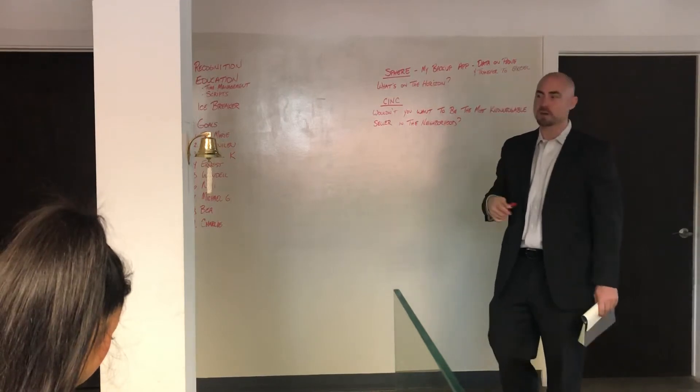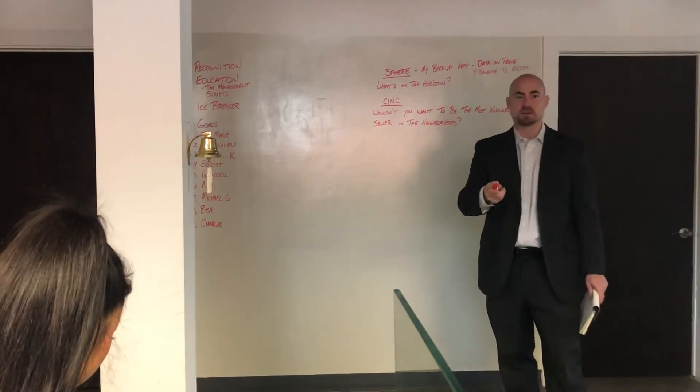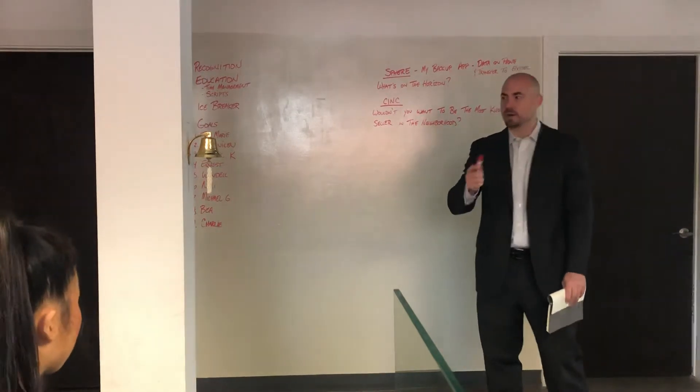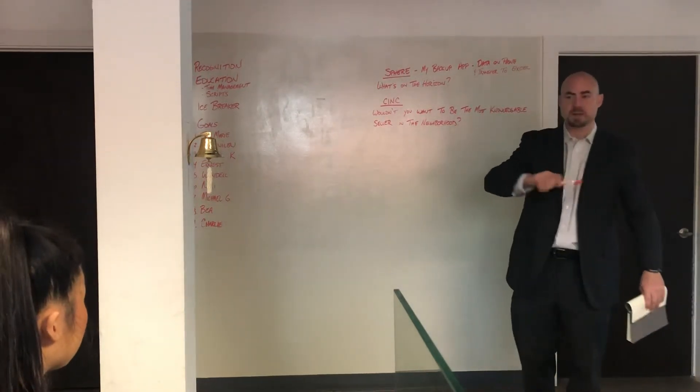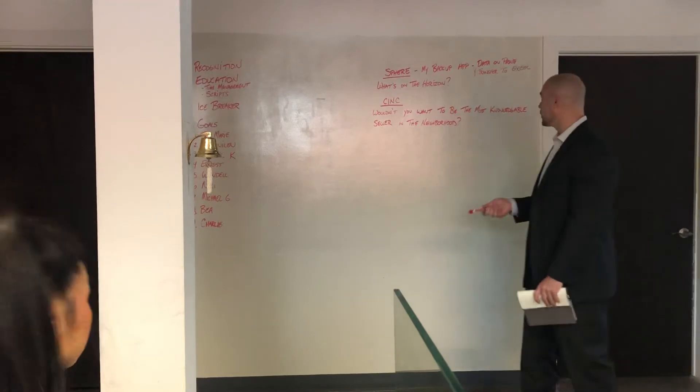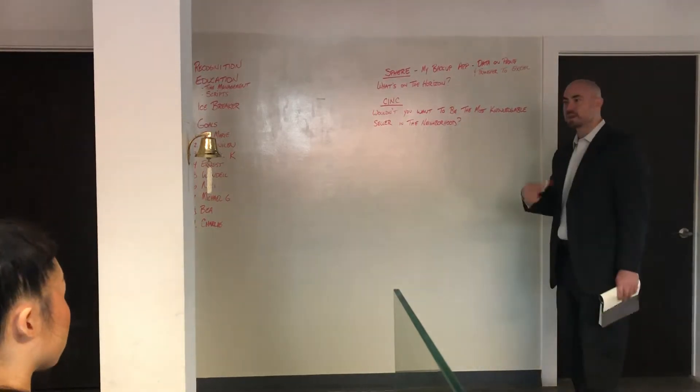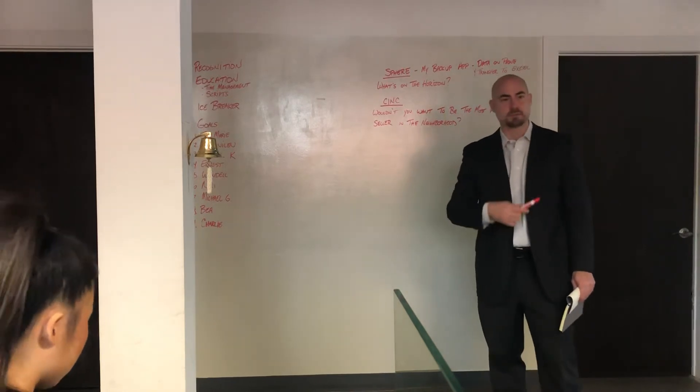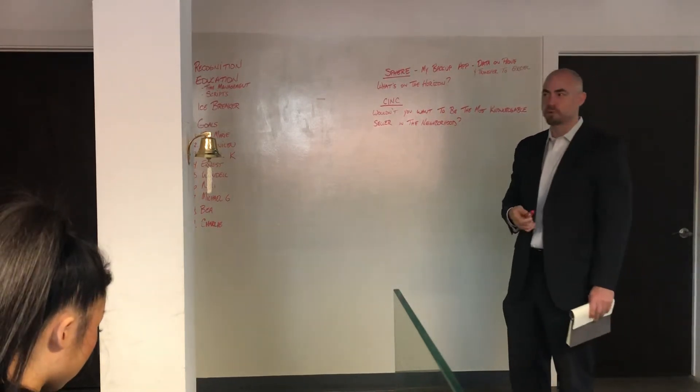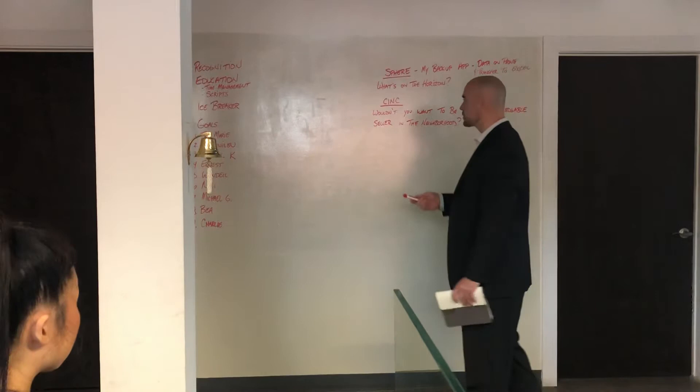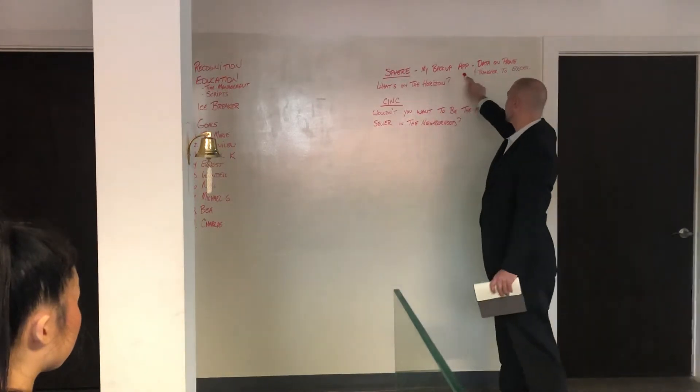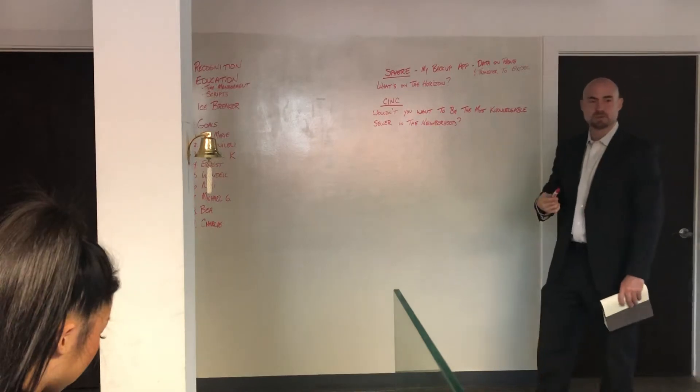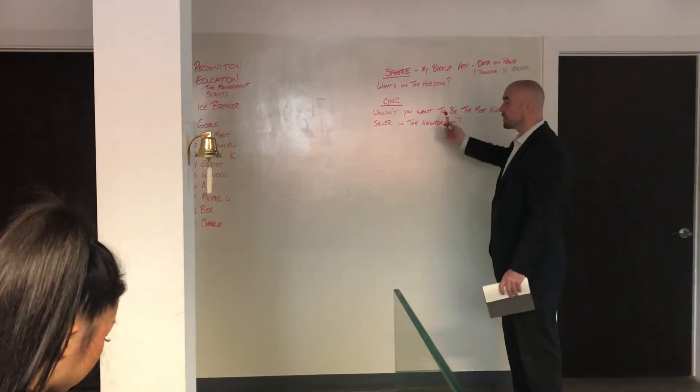The easiest way guys to really update your database is there's something called my backup app. So my backup app will take all your contacts, everything that's in your phone, and turn it into an Excel spreadsheet. So basically you'll have some people with phone numbers, email addresses, everything. And the cool thing is the easiest way to get a referral is through your actual database, your friends, your families, your acquaintances, people that you know.